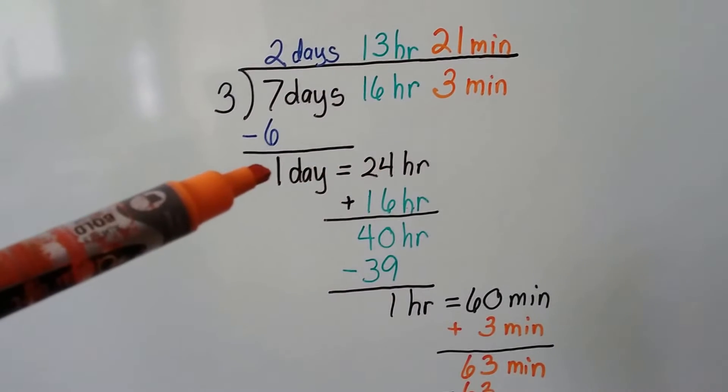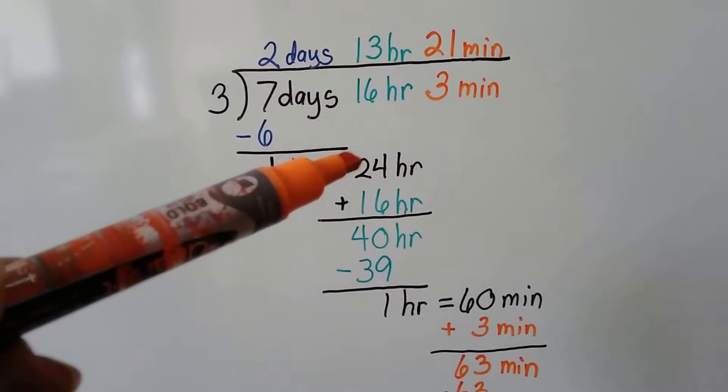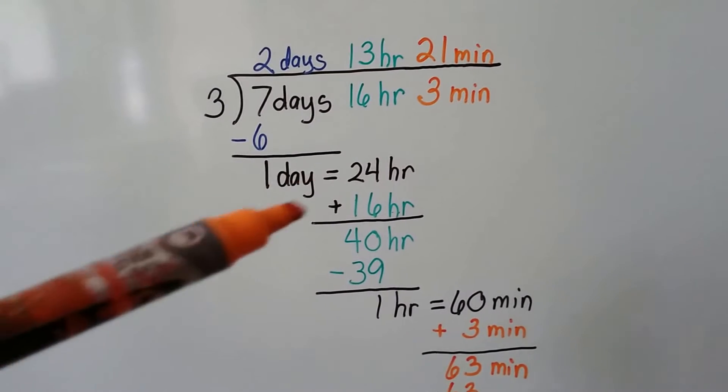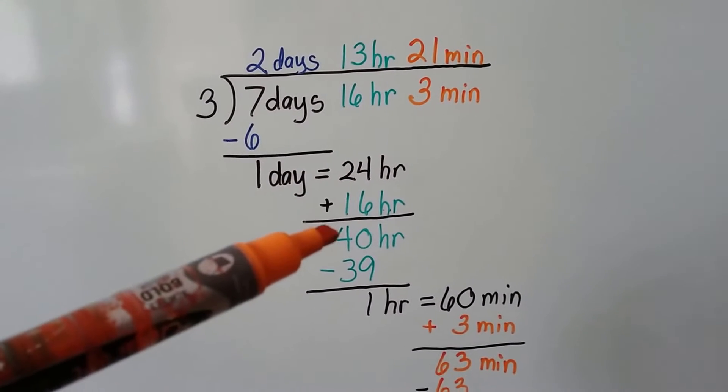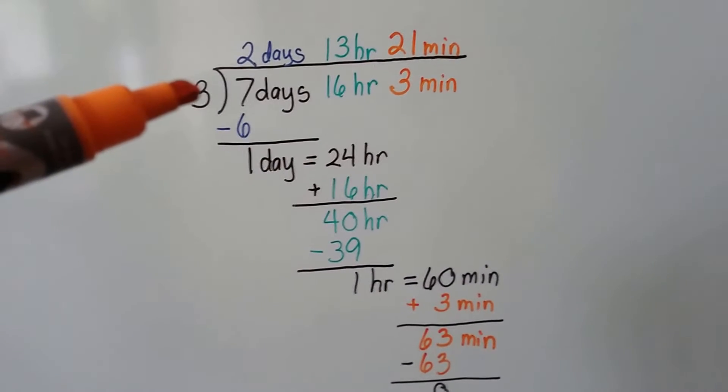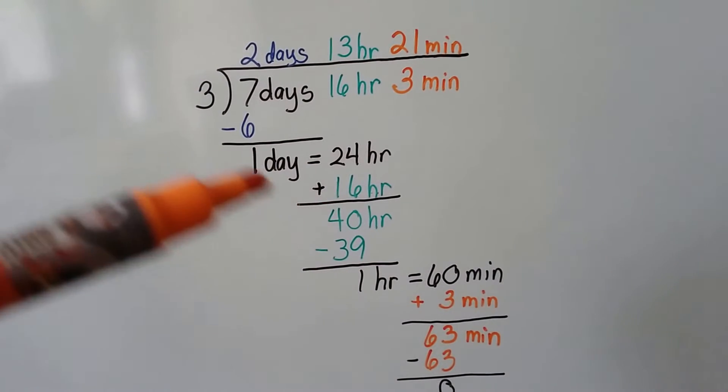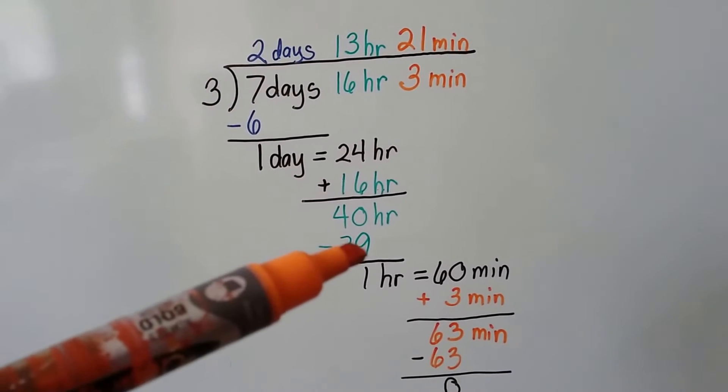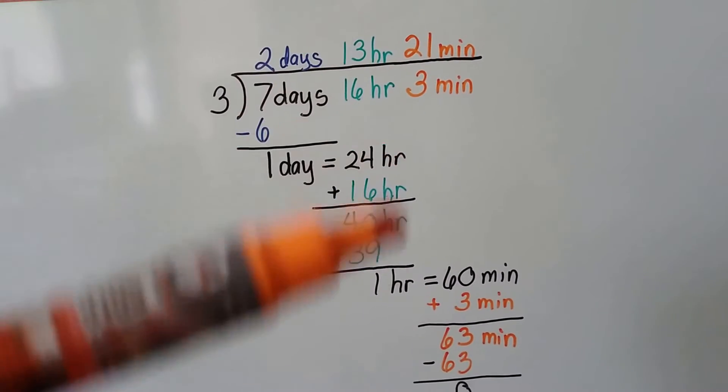Now to drop the hours down, we need to convert that day into hours. There's 24 hours in a day. 24 plus 16 is 40. So now we ask ourselves, how many times can 3 fit into 40? Well, 3 times 13 is 39. So we put our 13 up there.